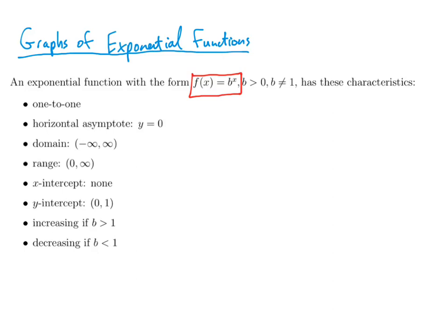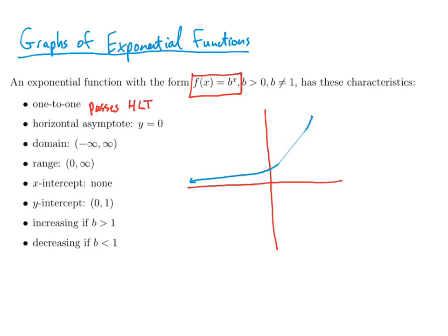So b has to be greater than 0 and it can't equal 1. An exponential function is one-to-one, meaning it passes the horizontal line test. The horizontal asymptote is y equals 0, so the function could be either increasing or decreasing. The function could have growth or decay. In both cases, the horizontal asymptote is y equals 0.